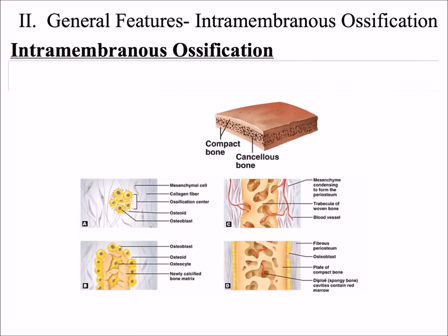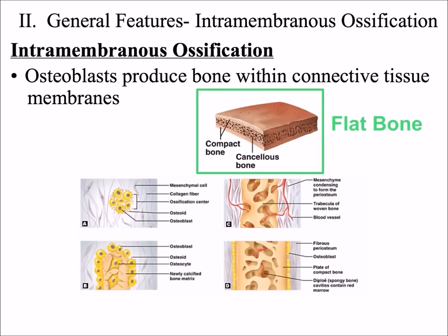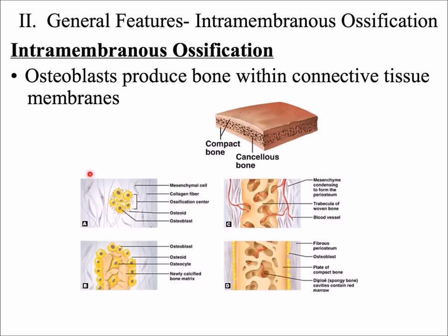Taking a closer look at intramembranous ossification — the important part you have to understand is that it is the process of making bone between connective tissue membranes. And the result of making bone within connective tissue membranes is a classification of bone called a flat bone. So intramembranous ossification is responsible for making flat bones. The way the process works: you have connective tissue membranes on each side, and within the middle of these membranes, cells spontaneously become osteoblasts and make bone — more and more bone — until eventually you have a flat bone.